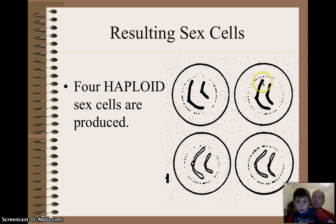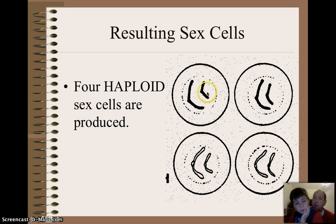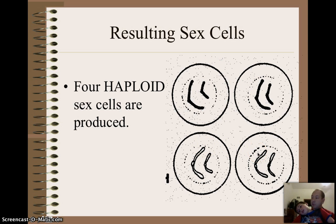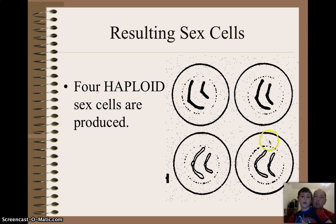Whoa. Now, each of these 4 cells are genetically unique — which means this will make a person, this will make a different person, this will make a different person, this will make a different person. Different girls and boys. Well, we don't know if this is going to be a girl or a boy. It all depends on the sex cells — whether it's an X chromosome or a Y chromosome.